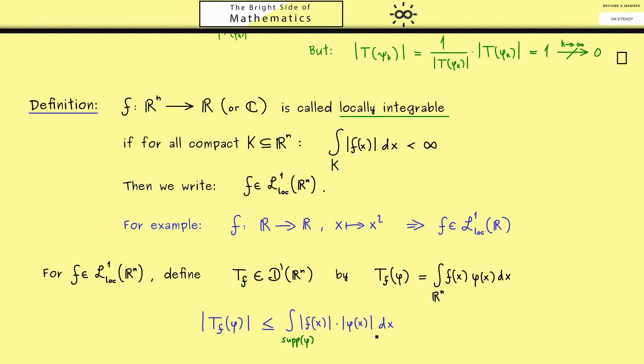Now instead of R^n, we can just write the support of phi. Simply because outside, a function phi is 0, which has no contribution to the integral. Also, we know we can estimate this one with the supremum norm of phi.